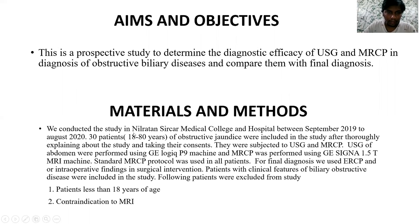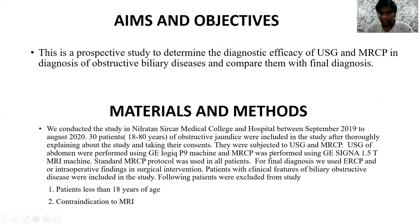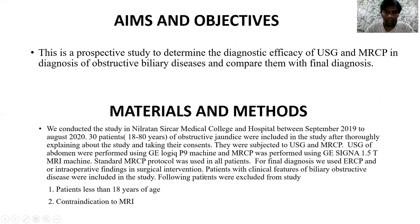Materials and methods: we conducted this study in Nilwatan Sarkar Medical College and Hospital between September 2019 to August 2020. Thirty patients between the age group of 18 to 80 years with obstructive jaundice were included in the study after thoroughly explaining about the study and taking their consent. They were subjected to USG and MRCP. USG abdomen was performed using a GE scanner, and a standard MRCP protocol was used. For final diagnosis, MRCP or intraoperative findings in case of surgical intervention were used.